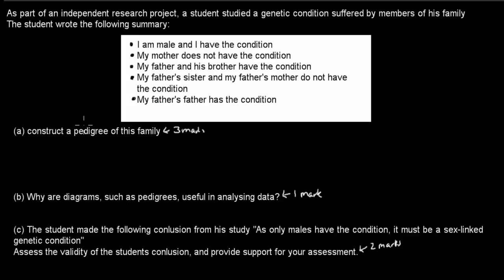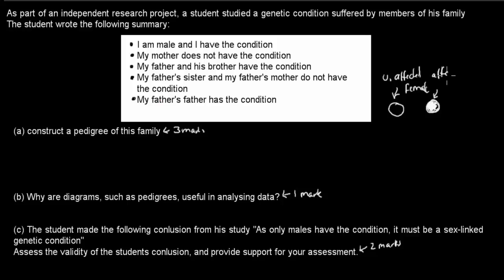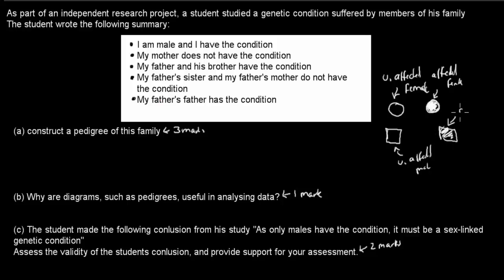Welcome back. First, because we have to construct a pedigree tree, we should establish the legend. An uncolored circle is an unaffected female. A colored circle is an affected female — she has the condition. An uncolored square is an unaffected male. A colored square is an affected male. You should always set up this legend at the beginning.